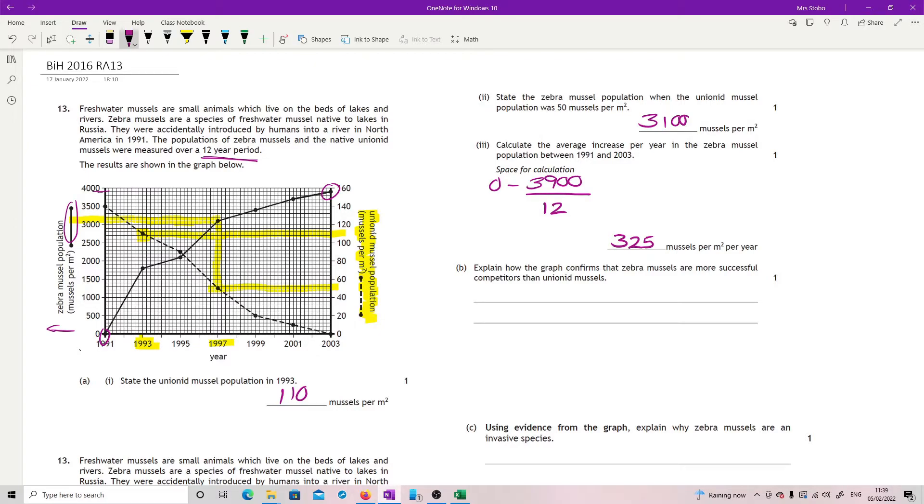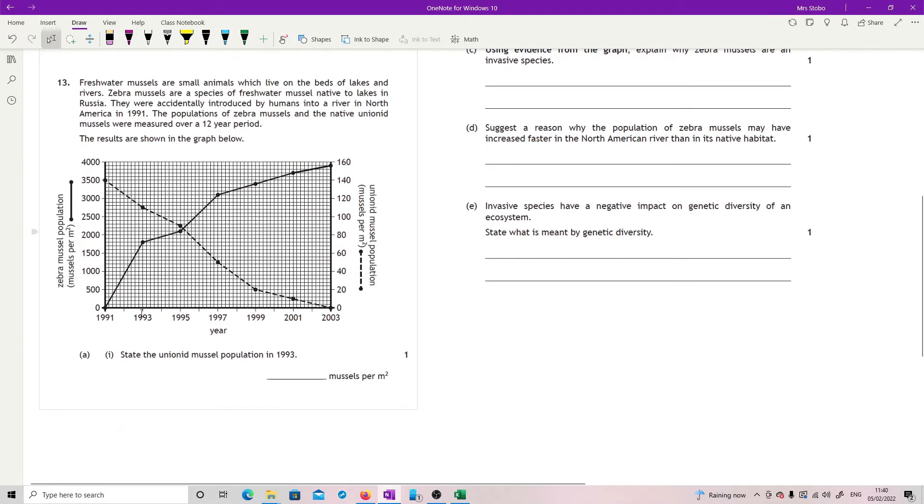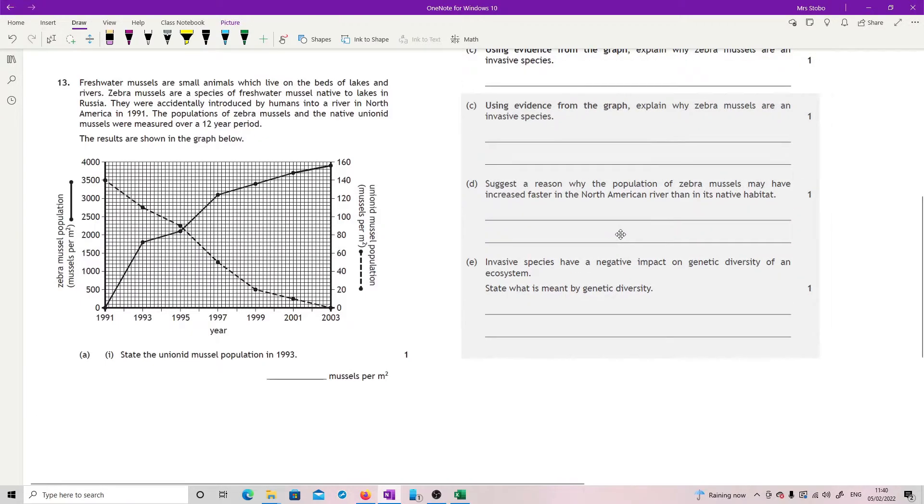Part B. Explain how the graph confirms that zebra mussels are more successful competitors than unionid mussels. It's kind of obvious here. Okay, so basically, we've got one increasing while the other one's decreasing. So the zebra mussels are increasing. I'm getting to the end of how much I can do today. This has been quite a few videos and I still need to obviously change them to upload them. So, okay, that's it. Right. And then I've copied it again just so I could get it next to the other set of questions.